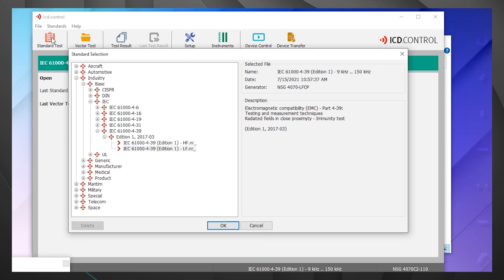Here is our standard selection menu. You can see we navigated through the industrial standards, through basic, to IEC, and then finally to IEC 61000-4-39. You'll see there's an HF and LF version. If you click on the information, you can see the different frequency ranges that each applies to. So let's click on IEC 61000-4-39, the low frequency component.